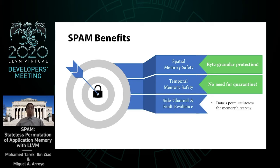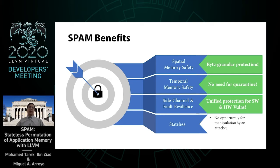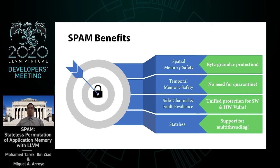A major benefit of SPAM over other memory safety techniques is that it provides side-channel and fault resiliency. All memory is permuted across the memory hierarchy, making leakages through the caches, Rowhammer, or cold-boot attacks much more difficult. Thus, SPAM provides a unified defense against software and hardware-based vulnerabilities. Finally, the SPAM approach is stateless — it does not require any metadata, making the job of securing the implementation simpler. Being stateless also allows SPAM to support multi-threaded applications out of the box.